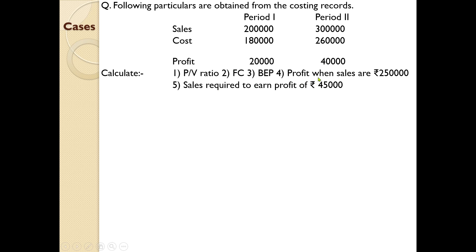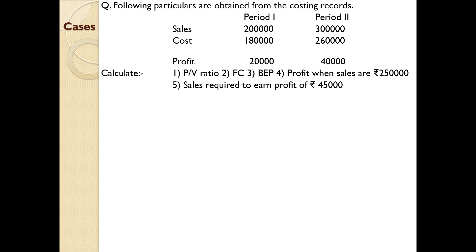One more question: sales required to earn a profit of 45,000. For PV ratio: change in profit divided by change in sales into 100. Take the difference in profit divided by the change in sales into 100, and you get the PV ratio.